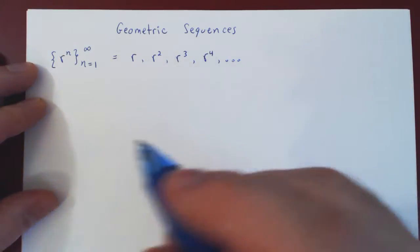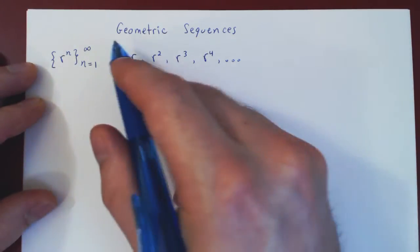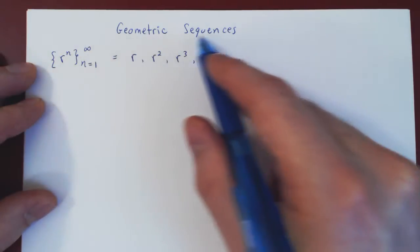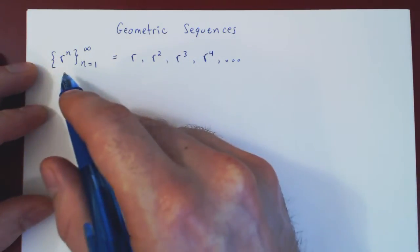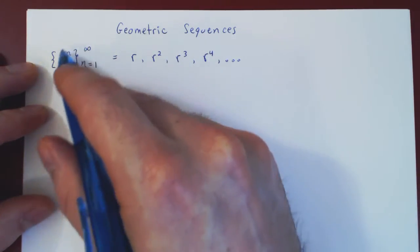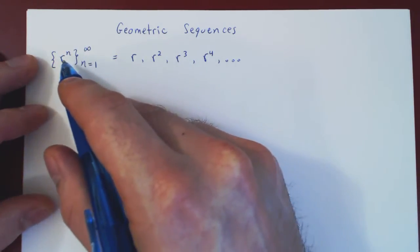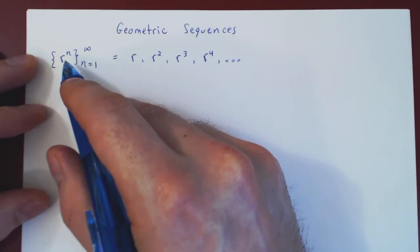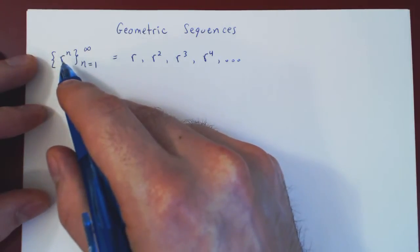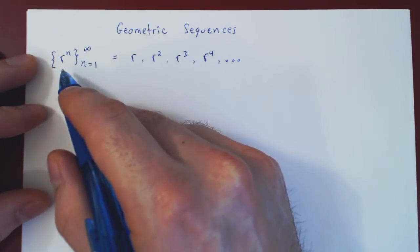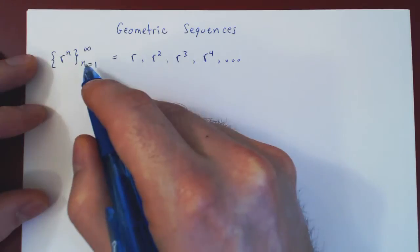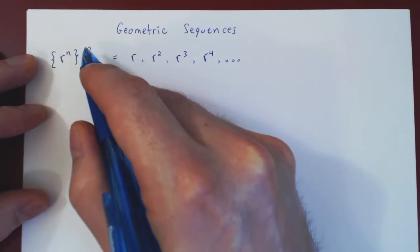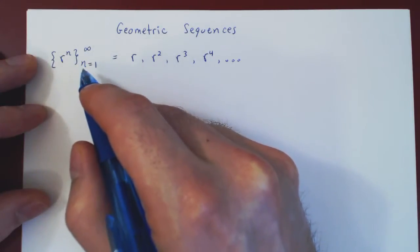In this video, we want to discuss geometric sequences. Here is a generic geometric sequence. We take r to be a fixed real number, and the sequence is simply r to the n, as n goes from 1 to infinity.